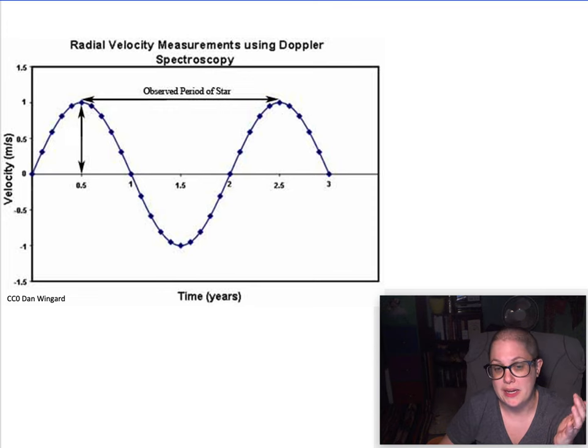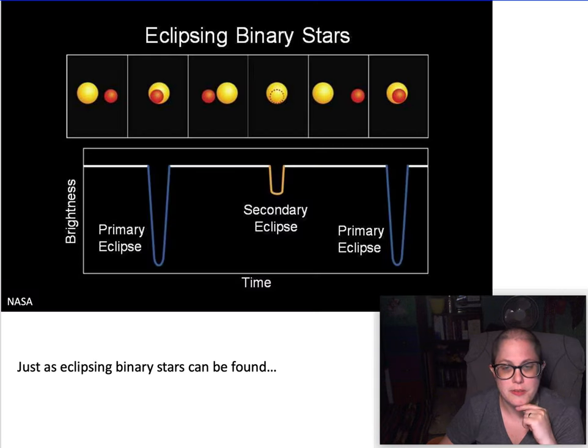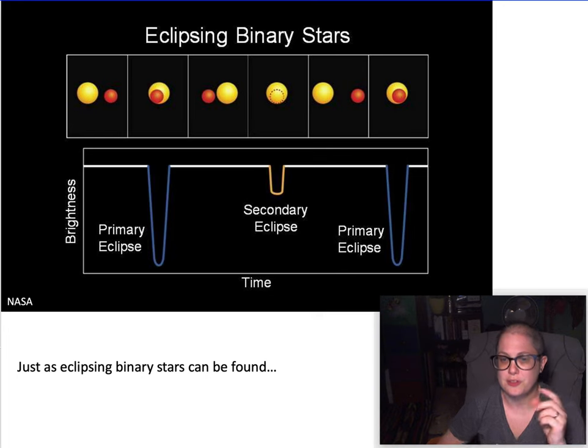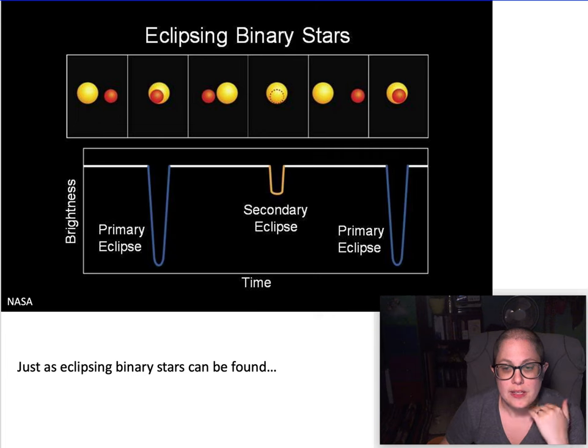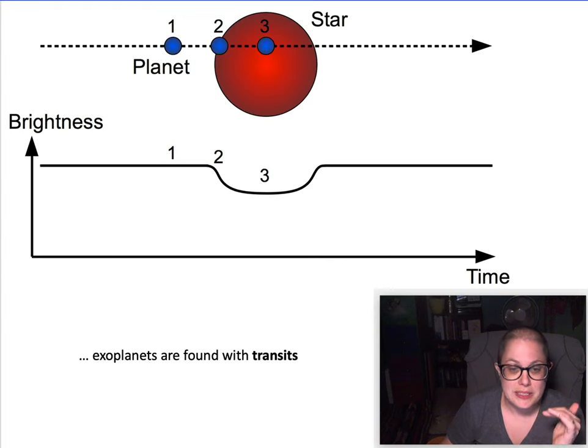The other type of binary stars we talked about that you can't see the two stars directly is an eclipsing binary, where the stars, sometimes you're seeing the combined light of both stars, sometimes it's a certain brightness, but when one goes in front of the other you lose some of that brightness, you get a dip. So just as you have eclipsing binaries, you can have this with planets going around their stars as well.